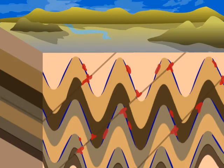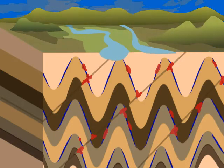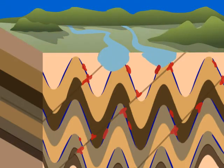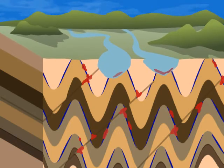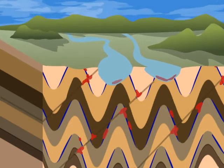Sometime after the original deposition of the gold, the rocks were exposed to the surface. Over time, surface weathering effects eroded the sedimentary rocks, including the gold.